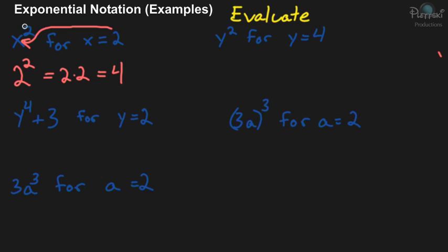Now remember, the exponent tells you how many times to multiply the base. So in this case, we're substituting 2 in for the base, which is x. So the exponent 2 is telling us to multiply the base 2 times itself twice. So 2 times 2 equals 4.